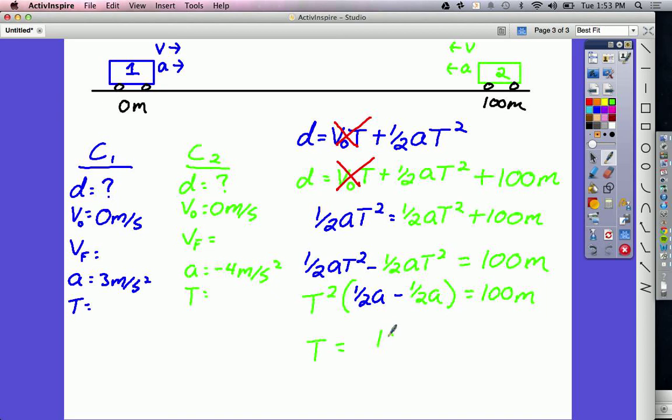And I'm going to get 100 meters here on the right divided by 1 half times 3 is 1.5 meters per second squared. And 1 half times negative 4 is negative 2. But don't forget, we're subtracting negative 2 right here. Minus negative 2 is like plus 2 meters per second squared.